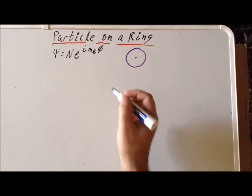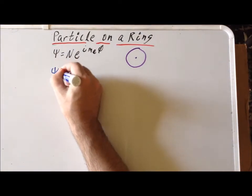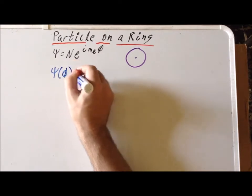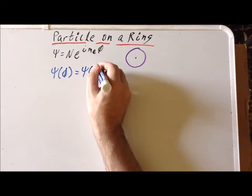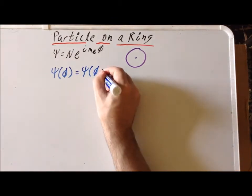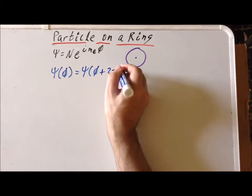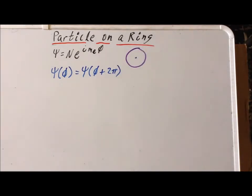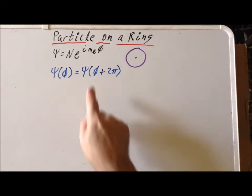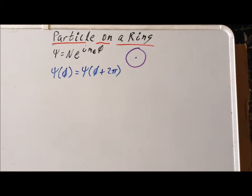In other words, if I look at wave function at any particular angle phi, this has to be exactly the same as the wave function I get if I add 2 pi to the angle. So 2 pi, recall, is the distance around the circle if I go around once. So each time I go around one more time, the wave function has to have exactly the same value that it had before.